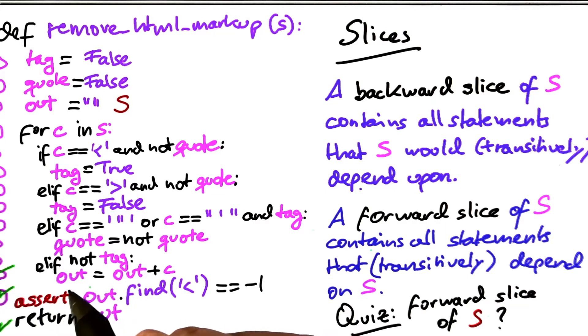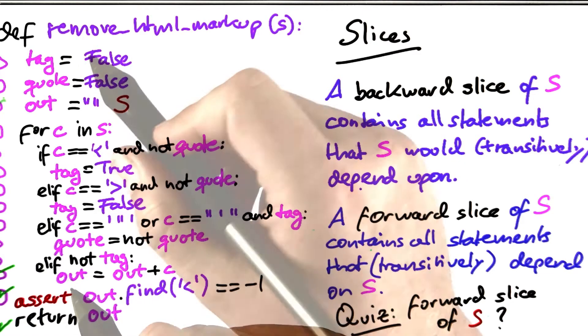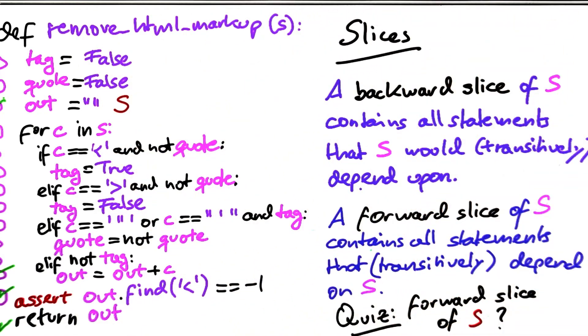That's fairly easy. What we need to check is simply the statements that read the out variable up here, which is down here, out equals out plus c, and the final assertion.